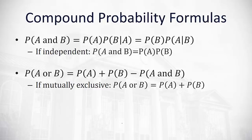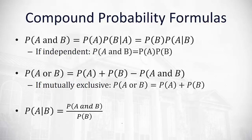If events are mutually exclusive, we can drop the overlap term and just add the two individual probabilities. For the given probability — P(A given B) — we take the probability of both occurring divided by the probability of the given information, which goes in the denominator.